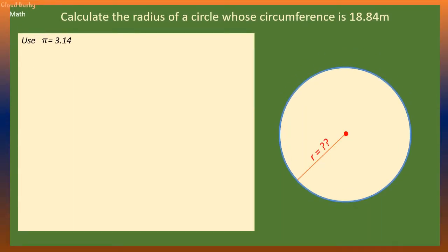So we have to find the radius of a circle whose circumference is 18.84 meters. Let's use the formula C is 2 pi r. That means the circumference is equal to 2 times pi times r.